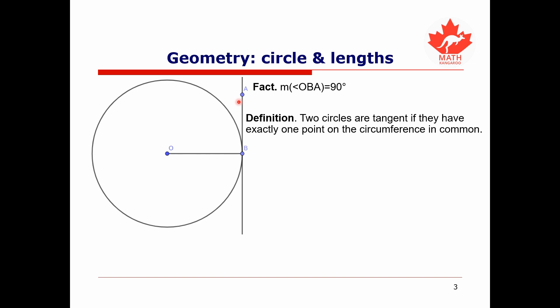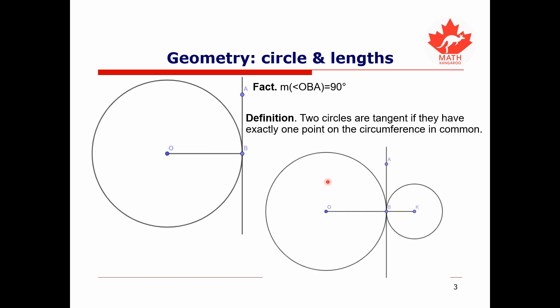Now this covers circles which are tangent to lines, but we can also talk about circles which are tangent to other circles. Two circles are tangent to each other if they have exactly one point on their circumferences in common. Here's a drawing of two circles that are tangent to each other because they share a point of tangency B. We can always draw a line which is tangent to both the large circle and the small circle.